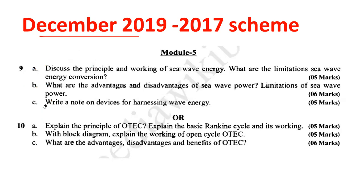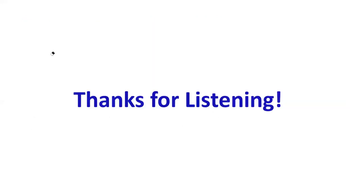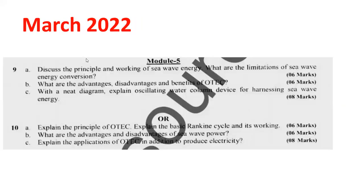For the 2015 scheme, one module carries 16 marks — 16 into 5 is 80 marks total. These questions are suitable for the 2015 scheme students; however, these questions are important regardless. Another one: explain the devices harnessing wave energy, and discuss the advantages of wave power. I hope you've got an idea about the major topics to focus on from Module 5, as all the questions are straightforward. Now I'll be moving on to the next segment: OTEC — Ocean Thermal Energy Conversion System.